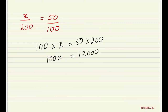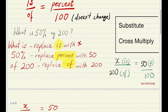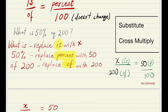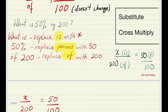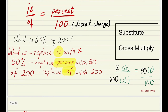We want X to stand on its own so we're going to divide both sides by the number in front of X. The number in front of X for this question is 100, so we're dividing both sides by 100. After canceling, X is equal to 100. Going back to the previous question — it says 'what is 50% of 200?' — we replaced 'what' with X, so that means 100 is 50% of 200.